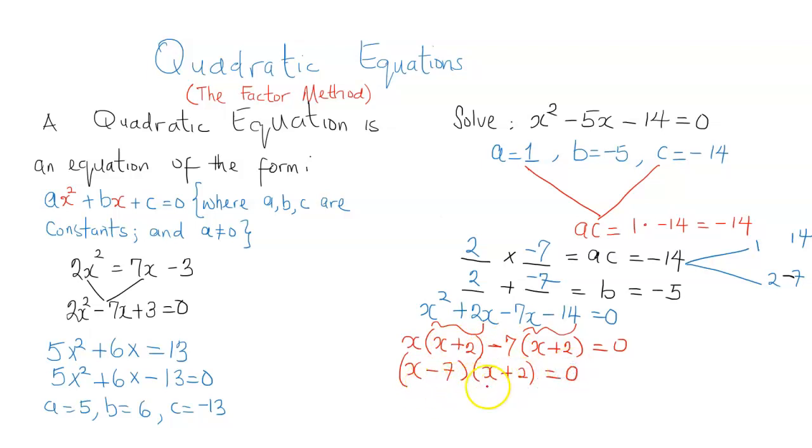So we've got a product of two items, x minus 7 and x plus 2 being equal to zero. So in mathematics, if the product of two numbers equals zero, what it tells us is that the first is either zero or the second one is zero.